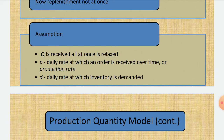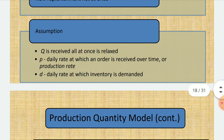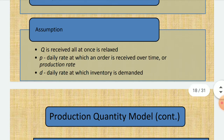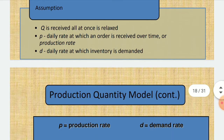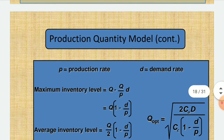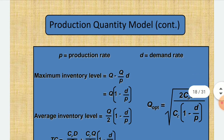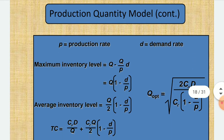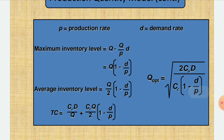P is the daily rate at which an order is received over time, or the production rate. D is the daily rate at which inventory is demanded. For the production quantity model, there are two formulas: production rate and demand rate.